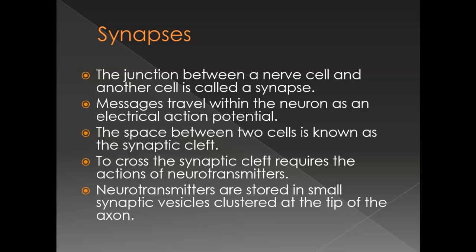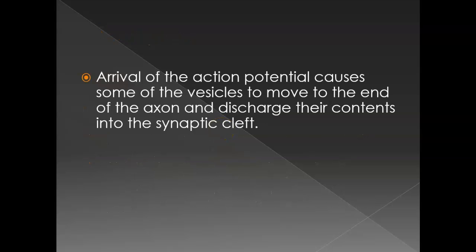Neurotransmitters are stored in little vesicles in these synaptic knobs, these axonal knobs. You have different types. How and which one gets released? That's the mystery — figure that one out and you win a Nobel Prize. The action potential arrives, causing the vesicles to move to the end of the axon and to discharge their contents into the cleft.